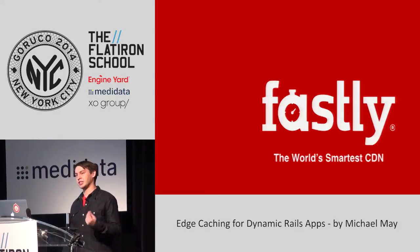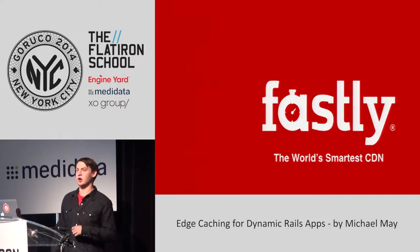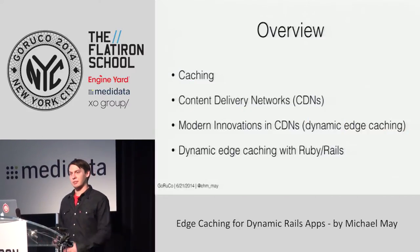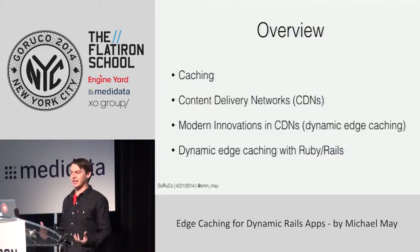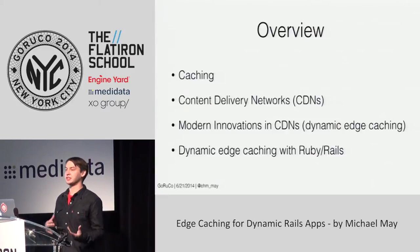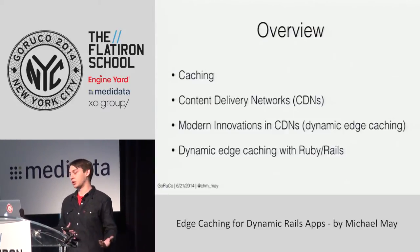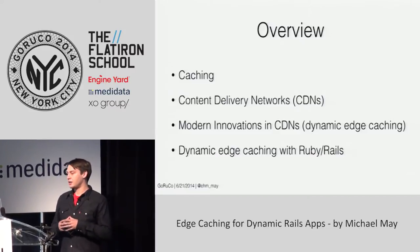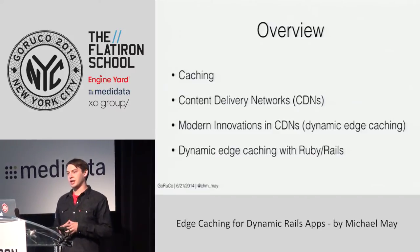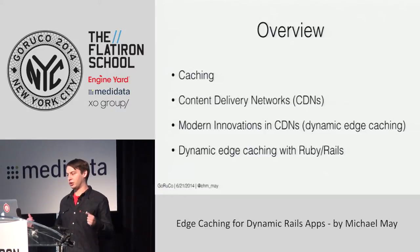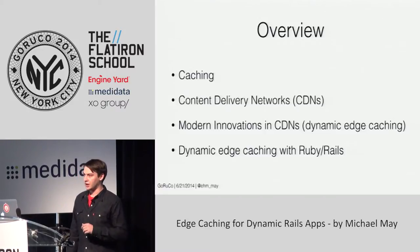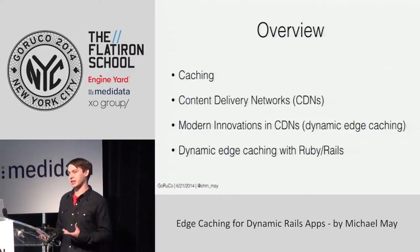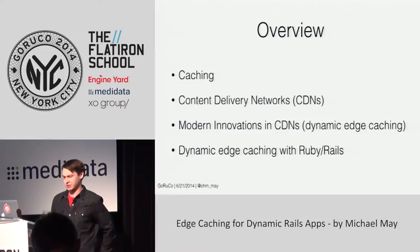Fastly is a content delivery network that's built on the open source Varnish cache. Today we're going to talk about caching and some ideas that make caching work. We're going to talk about content delivery networks and how those actually work. We're also going to talk about some interesting and innovative features in some content delivery networks that enable dynamic edge caching, and then finally how you can integrate dynamic edge caching into your Ruby and Rails apps.